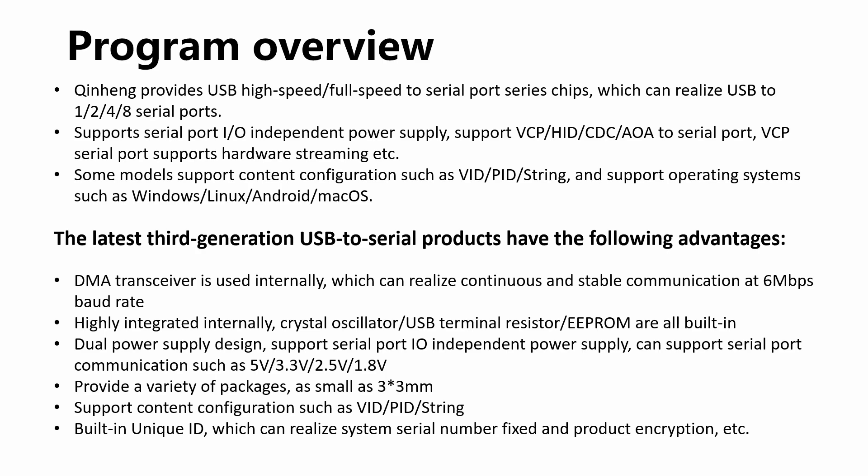The latest generation of WCH USB chips is the third generation. Some of the main advantages include a DMA transceiver used internally, which can realize continuous and stable communication — that direct memory access transceiver allows for a much larger buffer, enabling higher and faster transmission rates. An integrated crystal oscillator and EEPROM are also built-in, saving the buyer money on parts. They also come in different packages and sizes, some as small as 3x3 mm.